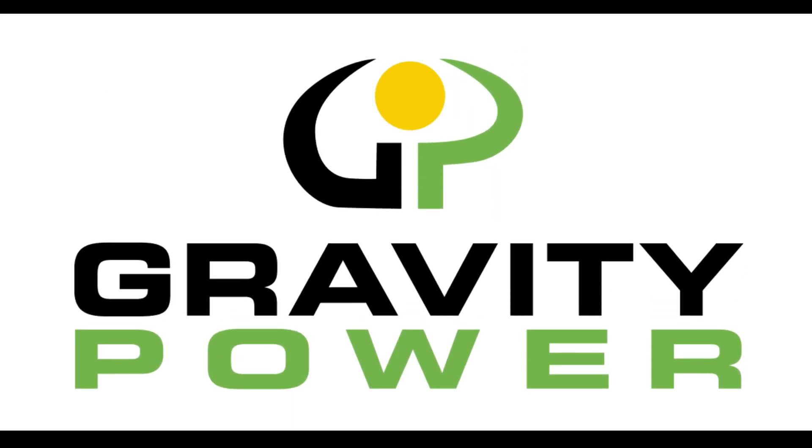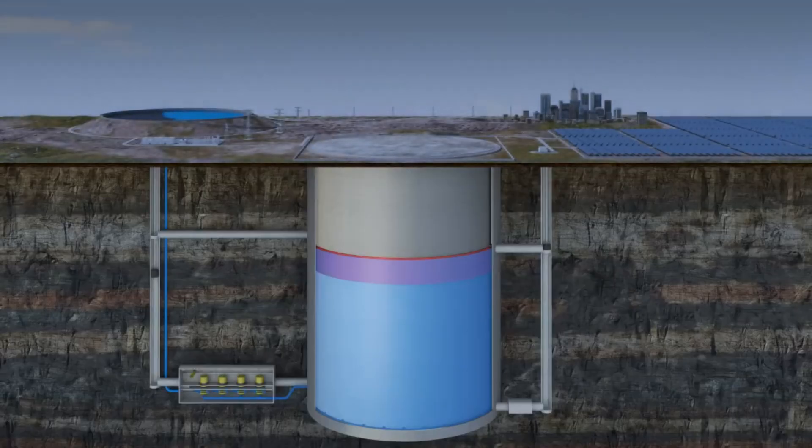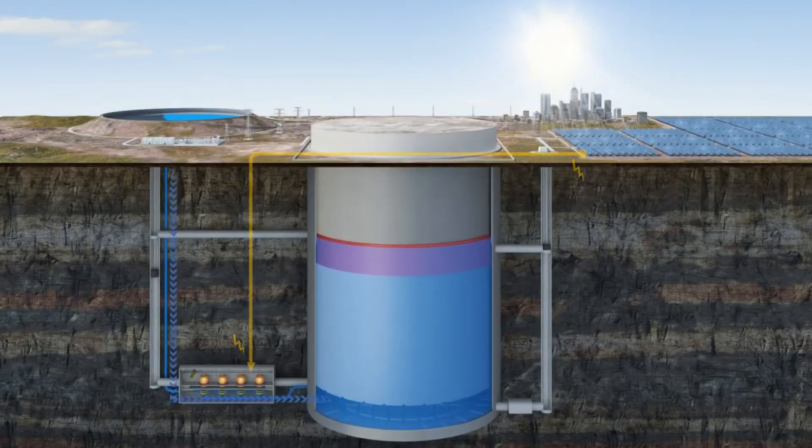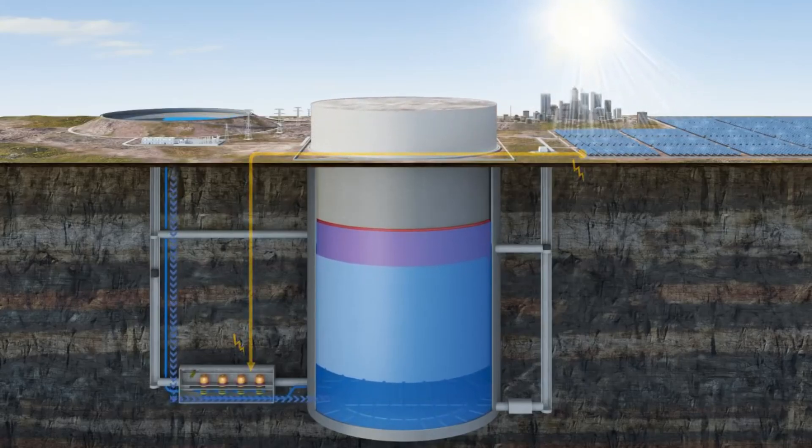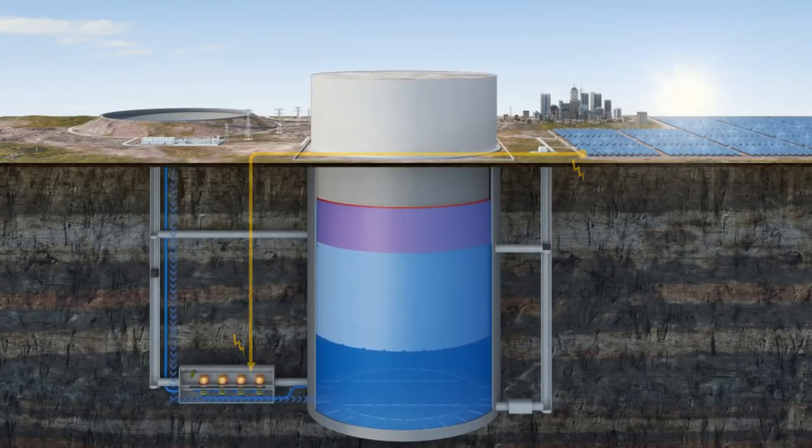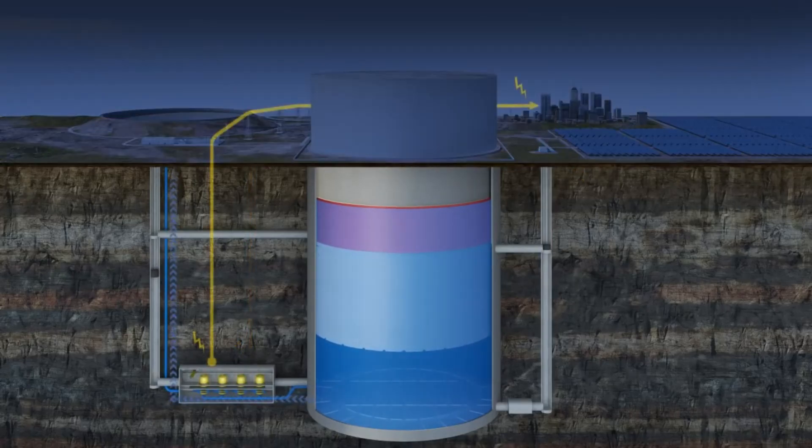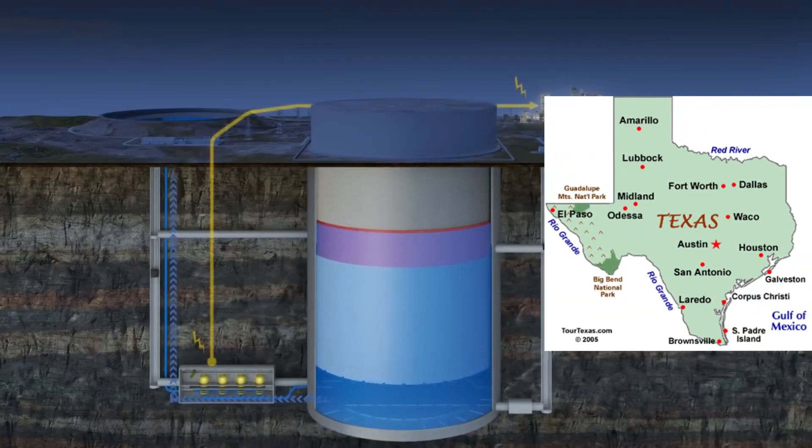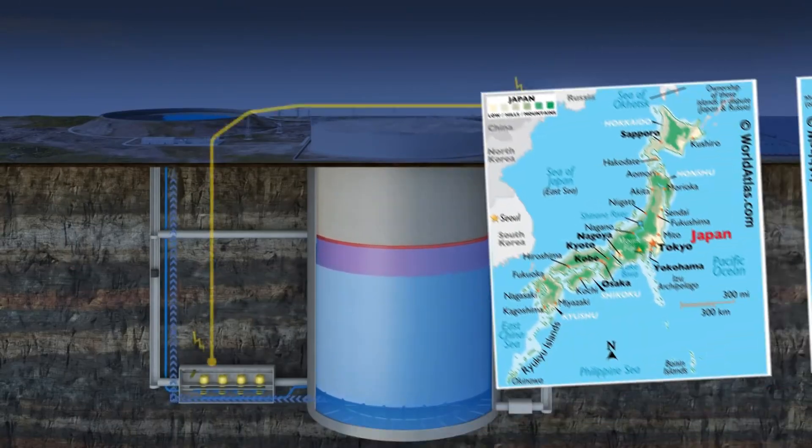Gravity Power is a US company that uses pistons to lift and lower water-filled cylinders in boreholes. The company claims that its system can store up to 50 MWh of energy with an efficiency of 80%. In 2017, it tested its first prototype in Germany and plans to build more projects in California, Texas, Hawaii, Australia, and Japan.